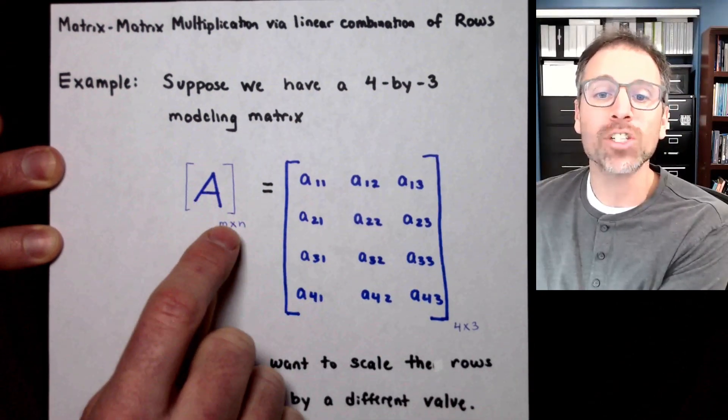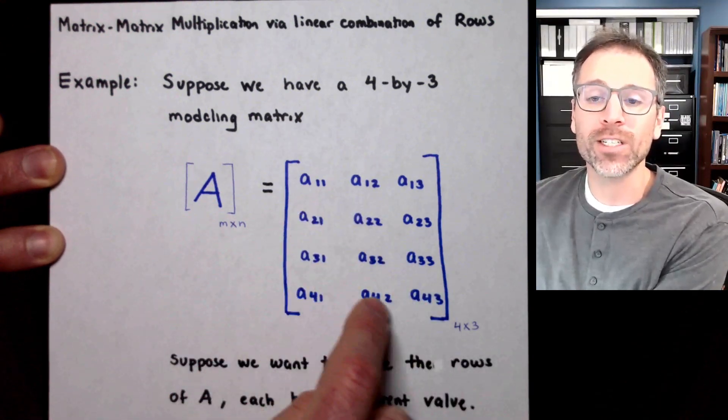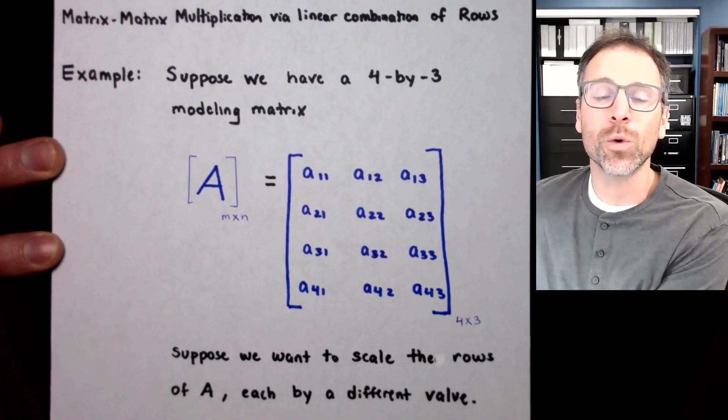So suppose we say that A, which is normally an M by N, is a general four by three matrix. It doesn't really matter what the entries are, so we'll keep it completely general.